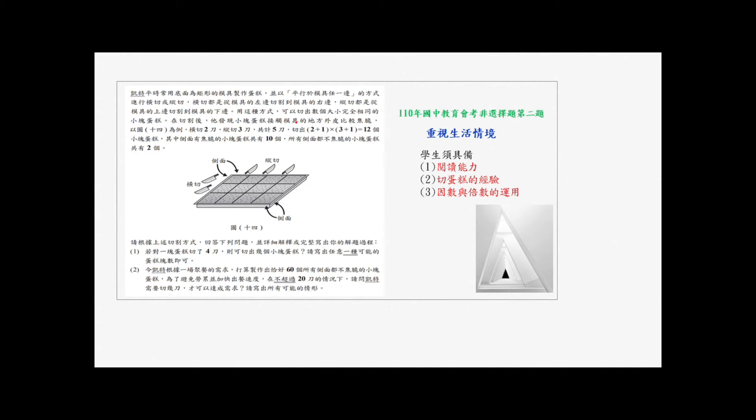用这种方式可以切出数个大小完全相同的小块蛋糕。在切割后他发现小块蛋糕接触模具的地方外皮比较焦脆。以图14为例,就是下图横切两刀竖切三刀,切出的小块蛋糕,就是长宽来讲比刀数会多一。所以宽来讲是二加一,长就是三加一,所以是三乘以四等于12个小块蛋糕。其中侧面焦脆小块蛋糕共有十个,所有侧面都不焦脆小块蛋糕共有两个,就是中间这两块。